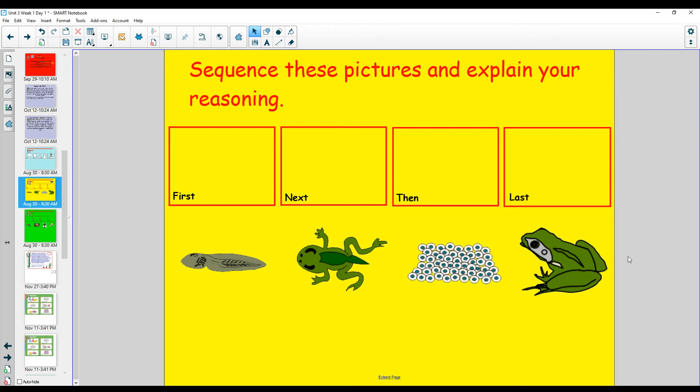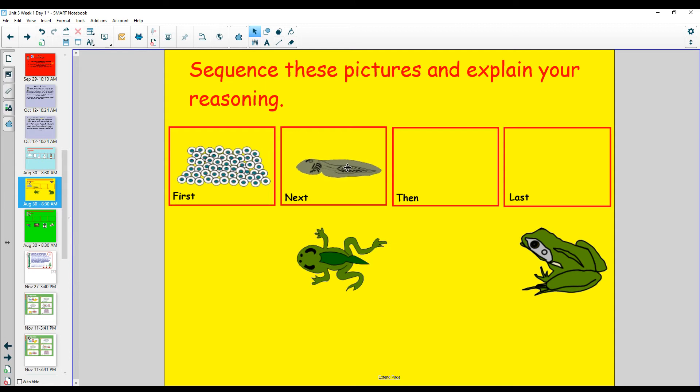Look at these pictures. What has to happen first? Well, first, the eggs have to be laid. These are slimy frog eggs. After the eggs hatch, they are a tadpole.